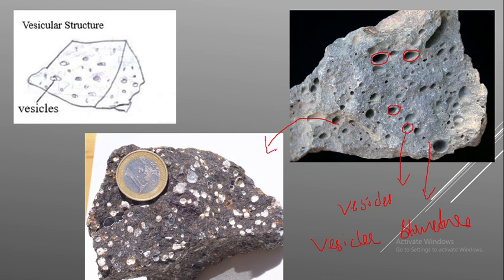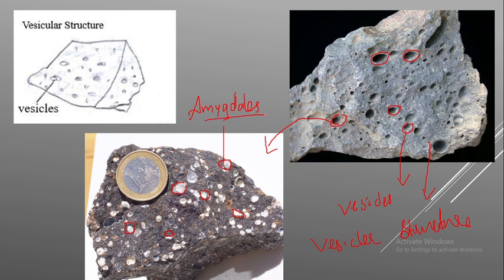When the vesicles are filled by some infillings — here you can see a white-colored infilling — the vesicles are completely filled by some kind of minerals. These infillings are known as amygdales. The infilling material may be calcium carbonate or similar materials. Rocks which have amygdales are known as having an amygdaloidal structure.